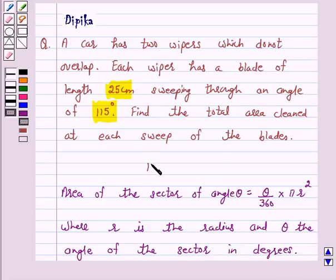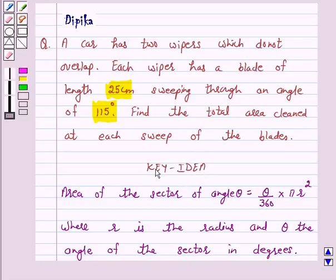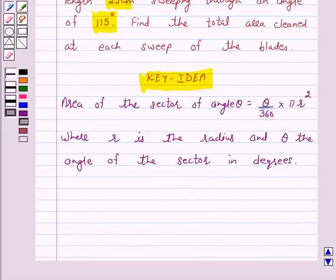This is a key idea behind our question. Let's start the solution. In the question it is given that each wiper has a blade of length 25 cm.